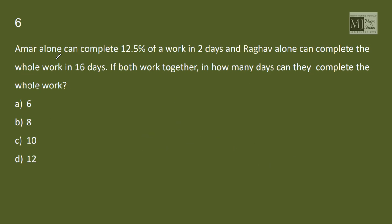Amar alone can complete 12.5 percent, that is one eighth of the work in two days, that means Amar is completing the entire work in 16 days. And Ragav alone can complete the whole work in 16 days, Ragav is also completing in 16 days. If both work together in how many days can they complete the whole work? If both time is same then the work would be completed in 16 by 2 that is 8 days.